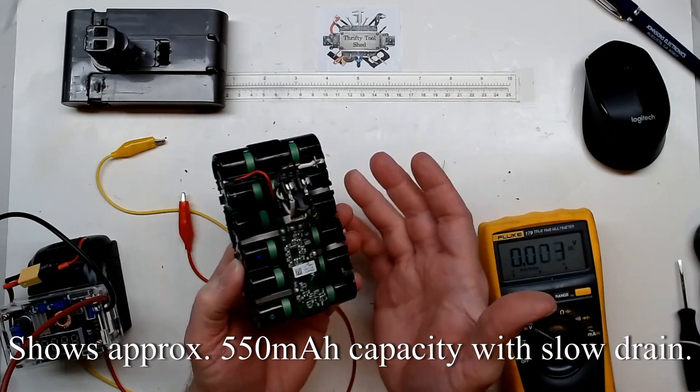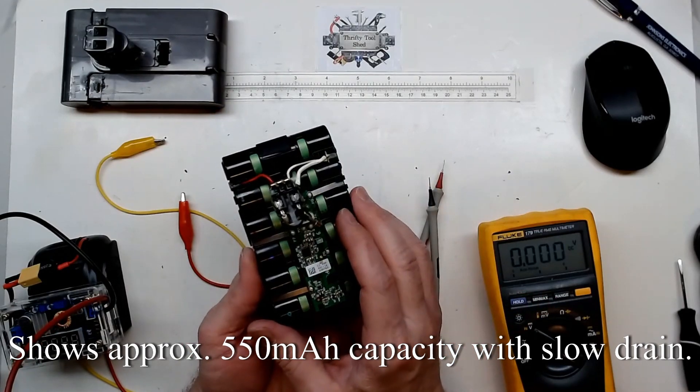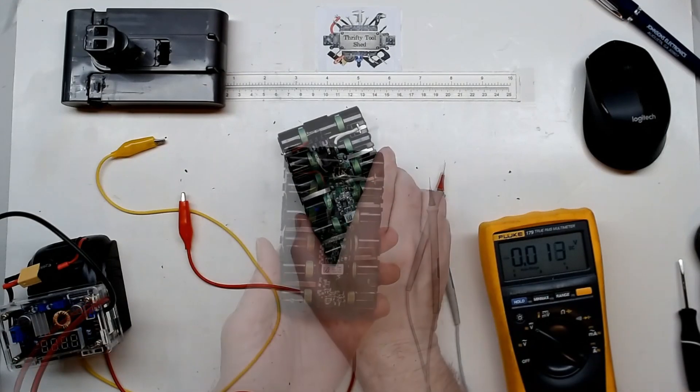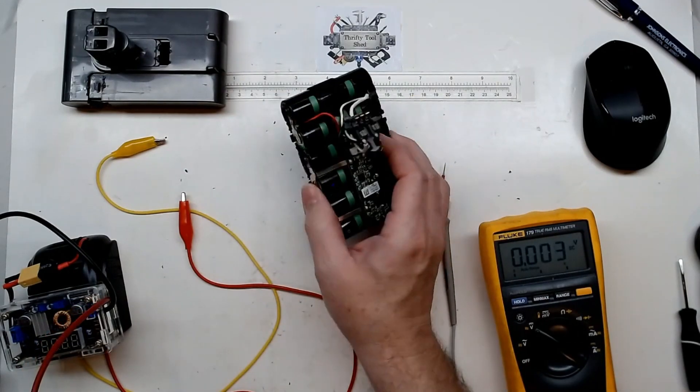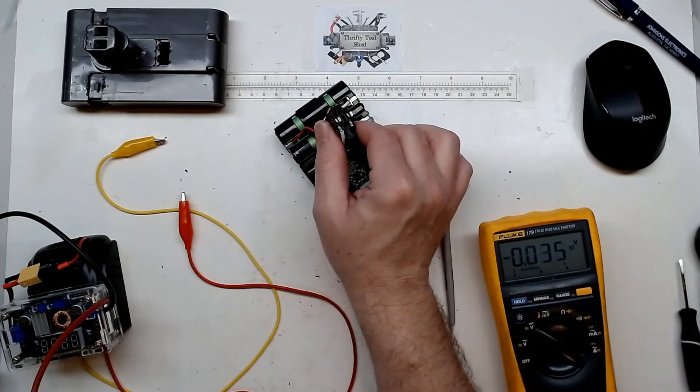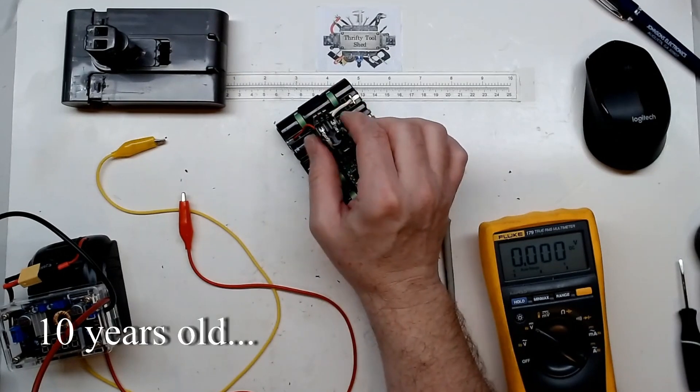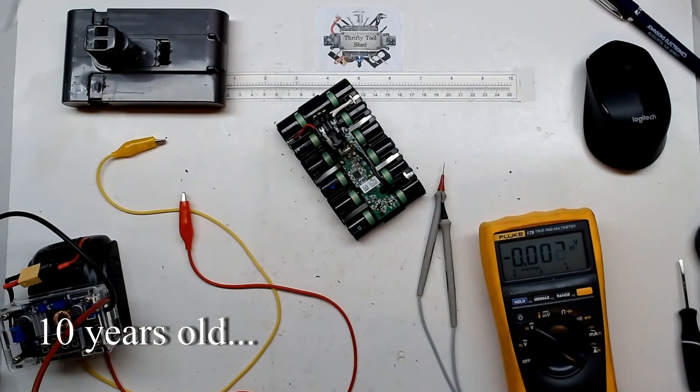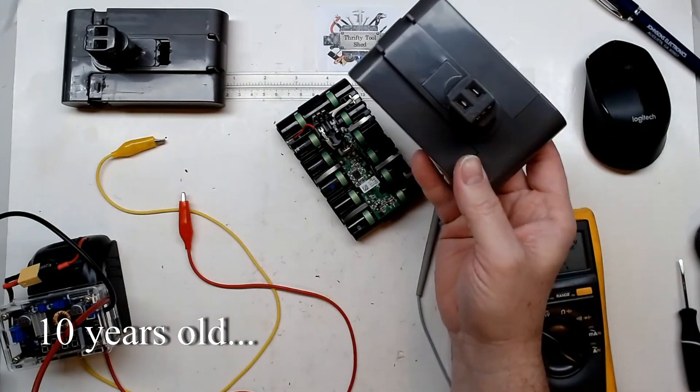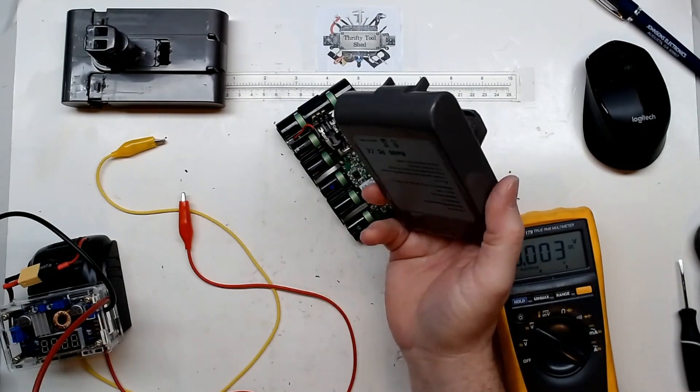So my next step, if I thought it was cost effective, will be to replace all the cells. So replacing all the cells will probably help this pack. This, you know, seven years old, we'll probably get it back in full operation. But one thing you can't overlook is Amazon has these batteries here.